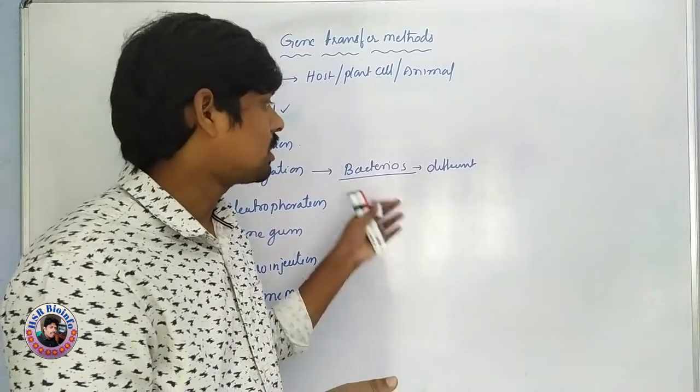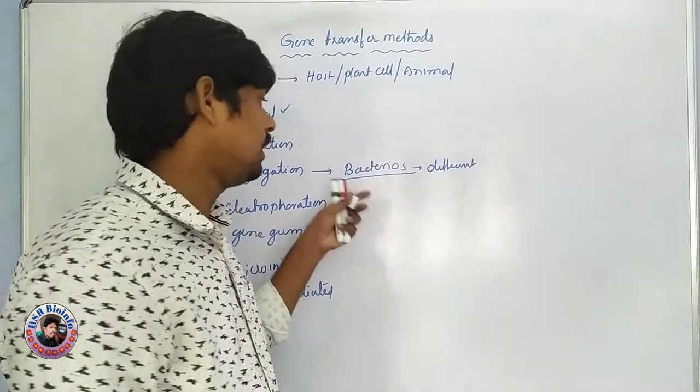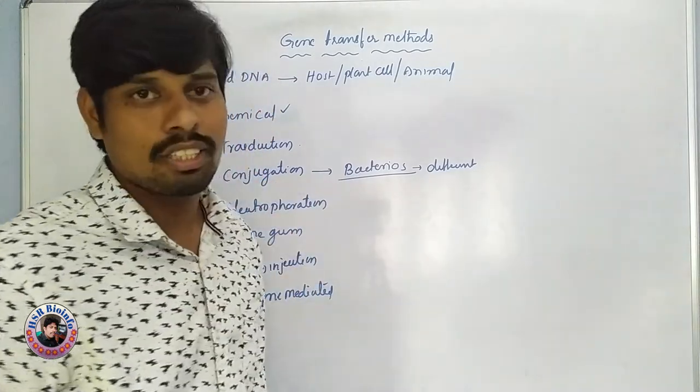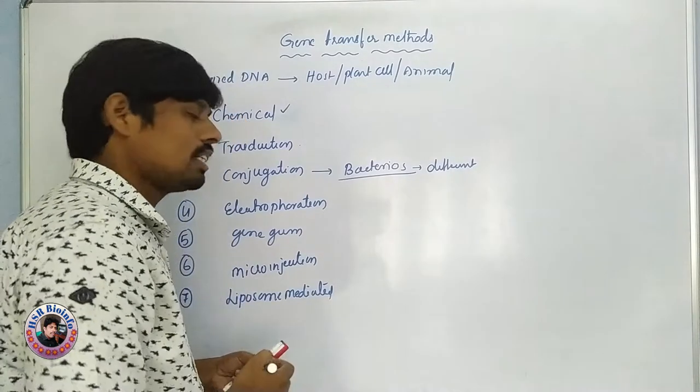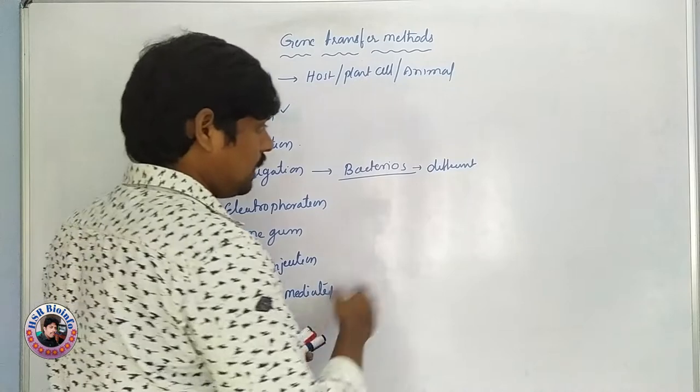For example, salmonella. Conjugation. First of all, we have a disease gene.